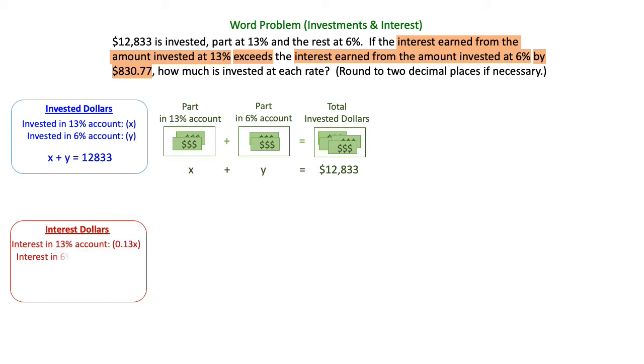So we're going to write a second equation that addresses these interest dollars, which is different from the invested dollars. We have the interest in the 13% account. So we're going to put a 13% or a 0.13 on the X. And we also have interest in the 6% account. We'll write that as a decimal 0.06Y.